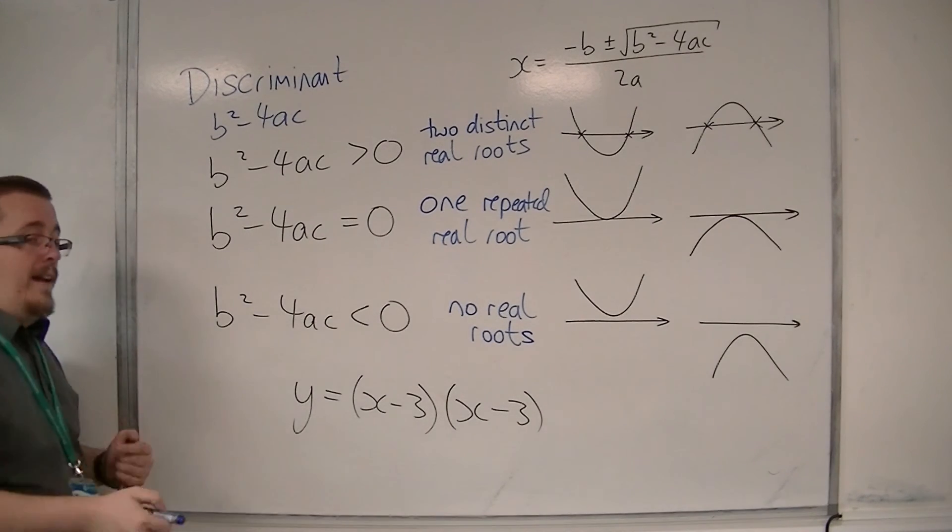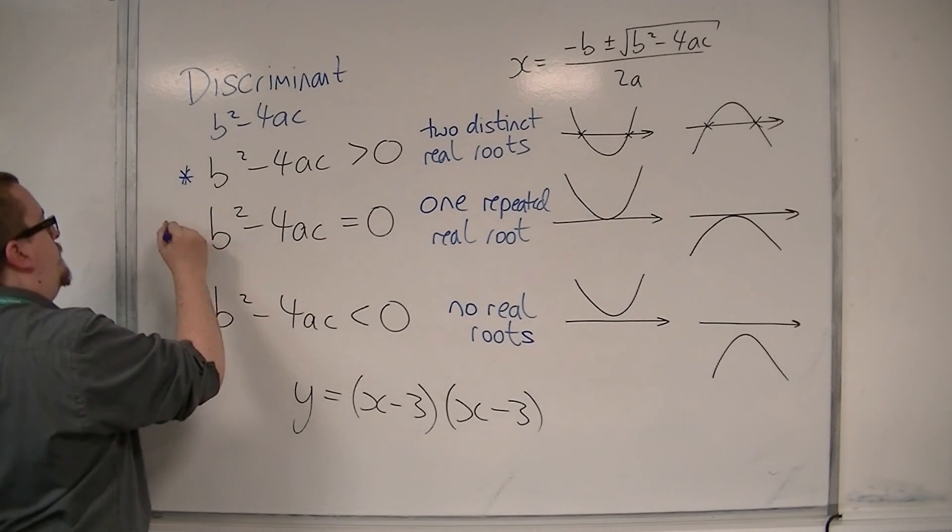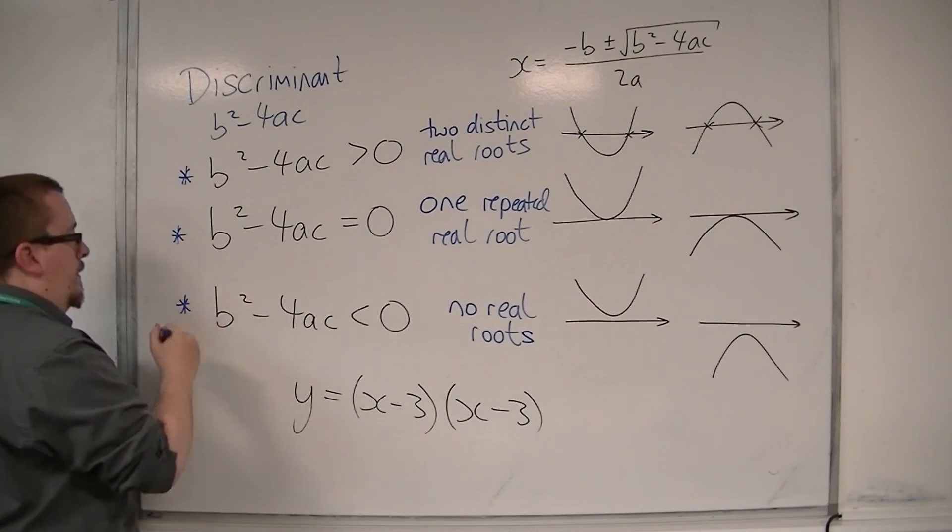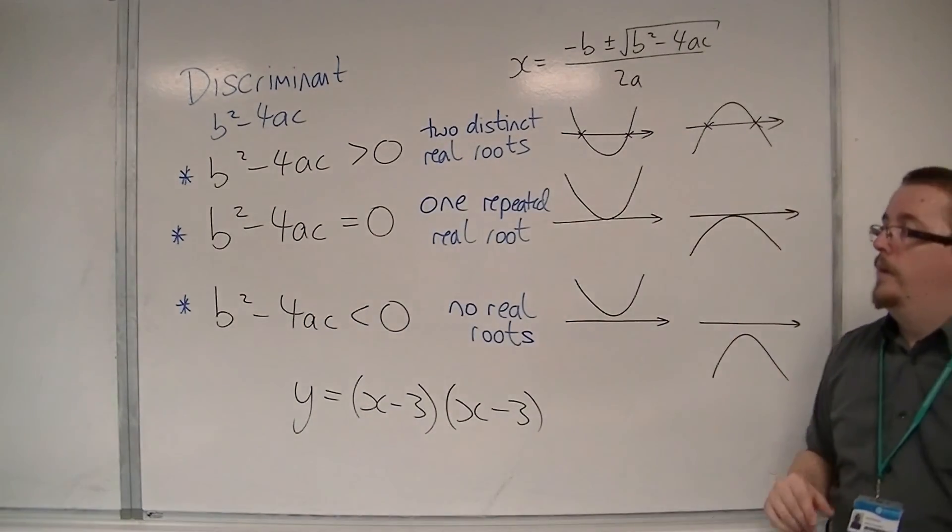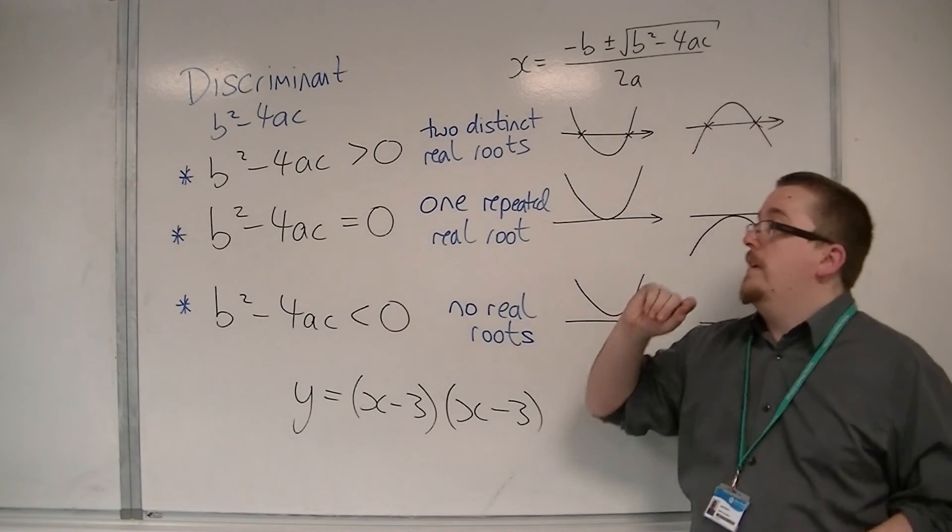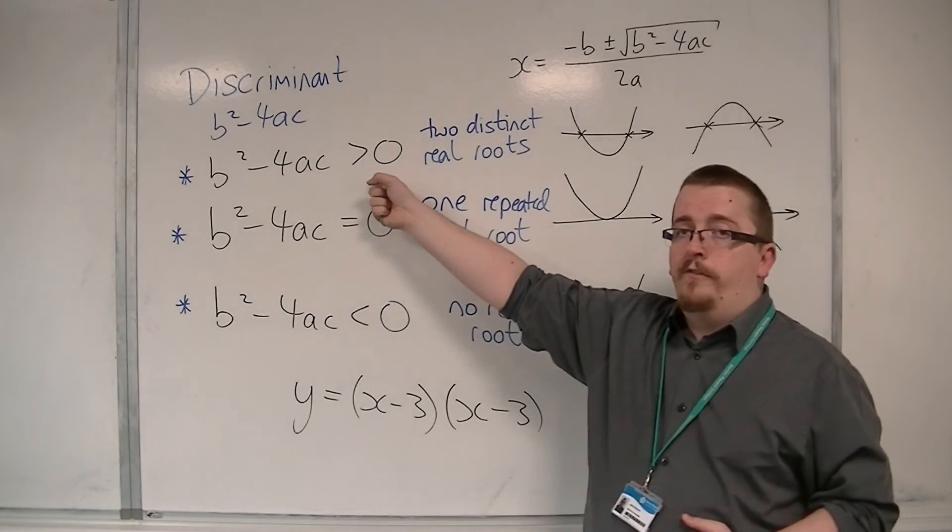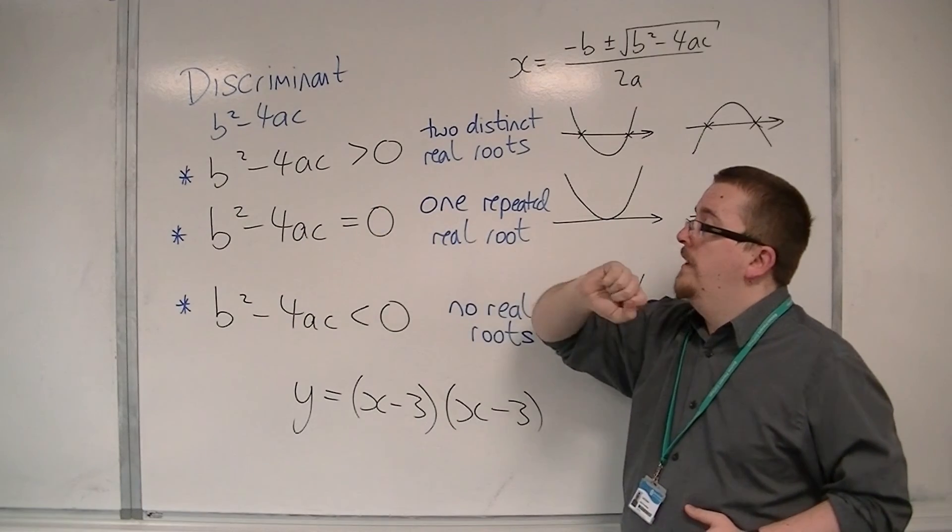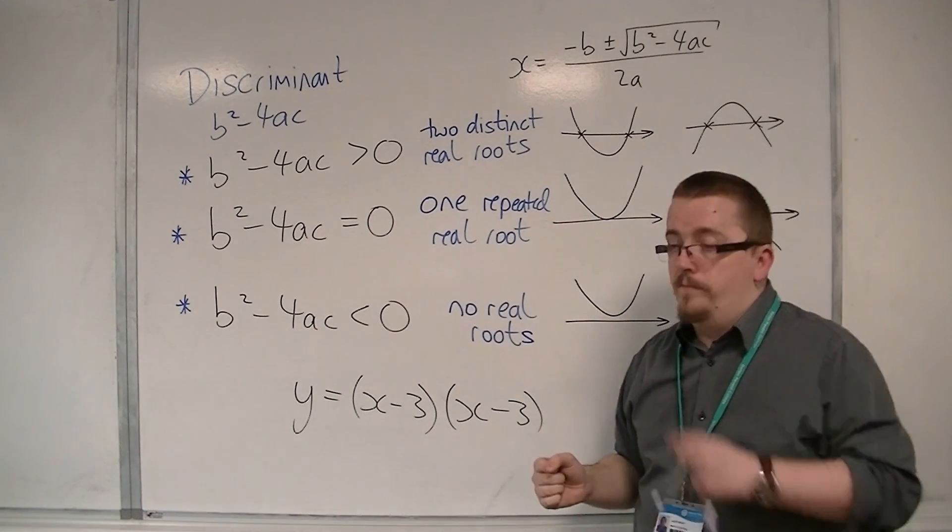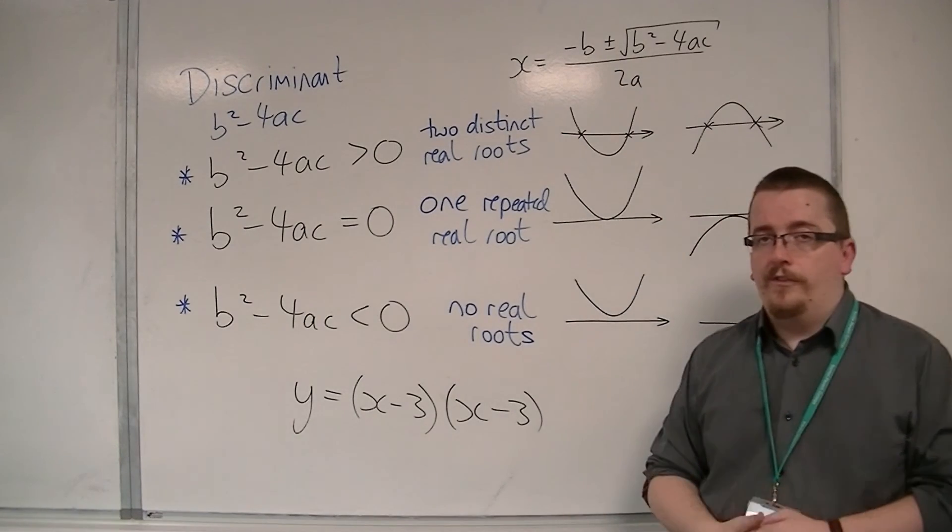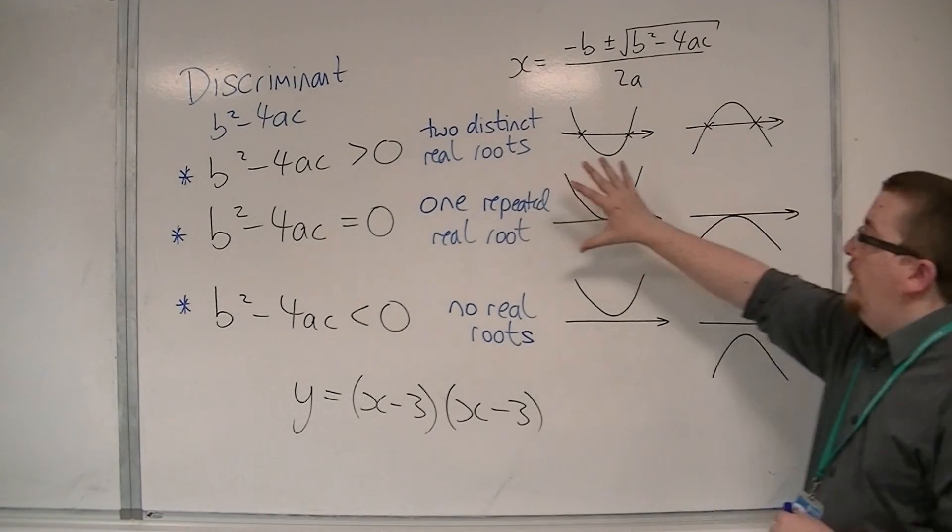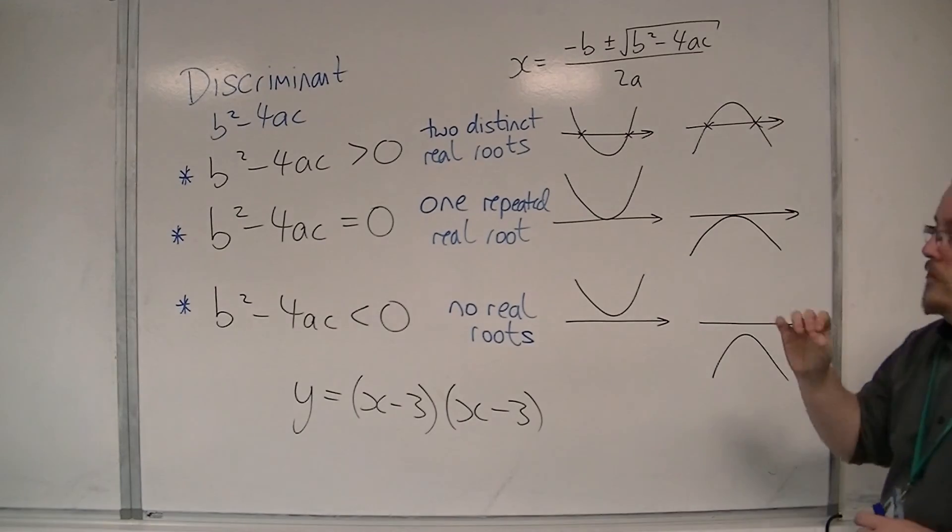So you've got three cases. And it's important you know what it means for each of them. So the discriminant can either be strictly positive, so greater than zero, it can be equal to zero, or it can be strictly negative, so less than zero. And this is what we can infer from that information.